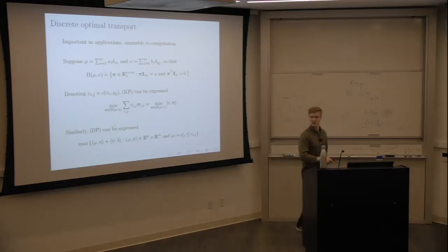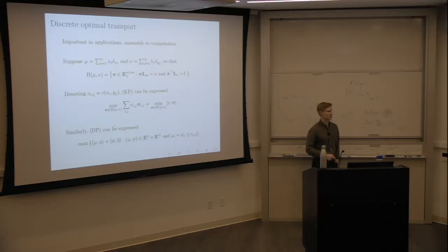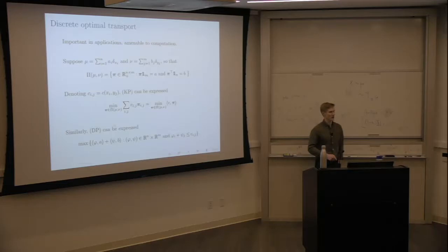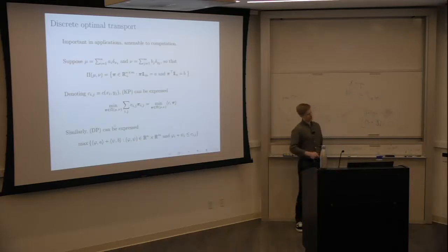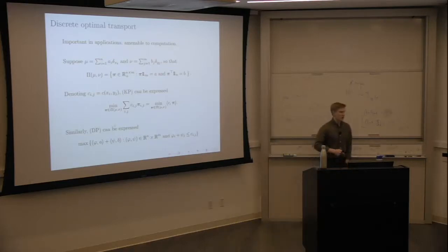We can similarly describe the dual problem as a reduction: we maximize over vectors phi and psi the inner product of phi with a plus psi with b, subject to linear inequality constraints. From this formulation it's easy to see that this is a linear program — the objective function is linear and the constraints are linear inequalities.